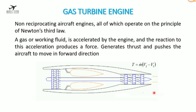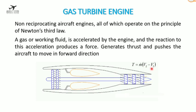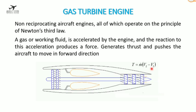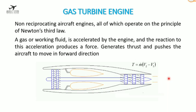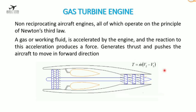The thrust produced in the engine is responsible for the aircraft moving in the forward direction. The equation for thrust is: T = m-dot × (V2 − V1), where m-dot is the mass flow rate (mass per unit time), V2 is the velocity of the exit air, V1 is the velocity of the inlet air, and thrust T is a force measured in Newtons.